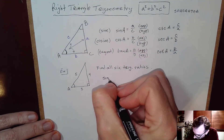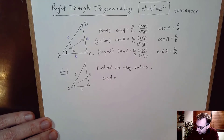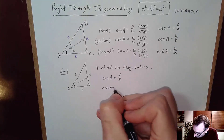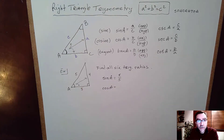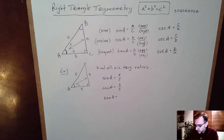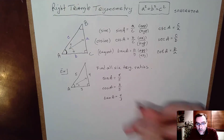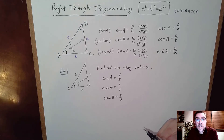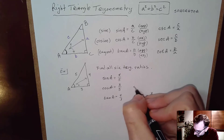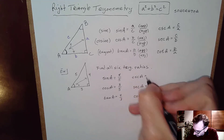By definition, sine of A equals the side opposite over the hypotenuse. The side opposite of A is 4, and the hypotenuse is 5, so that ratio is 4/5. Cosine of A is the side adjacent over the hypotenuse, so 3/5. Tangent of A is the side opposite over adjacent, so 4/3. The reciprocals give us: cotangent of A is 3/4, secant of A is 5/3, and cosecant of A is 5/4.